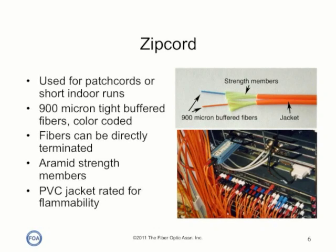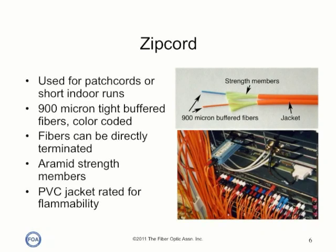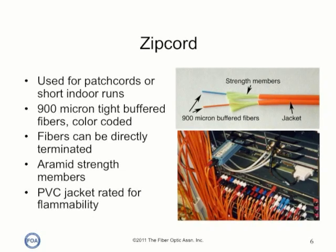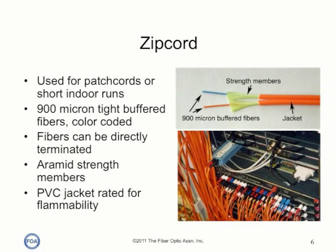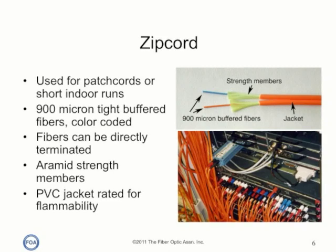It consists of two 900 micron buffered, tight buffered fibers, color coded, surrounded by aramid strength members and covered by a PVC jacket rated for flammability. Zip cord can be used for patch cords on patch panels or connecting up equipment. It can be laid in cable trays or even pulled by the strength members into conduit.